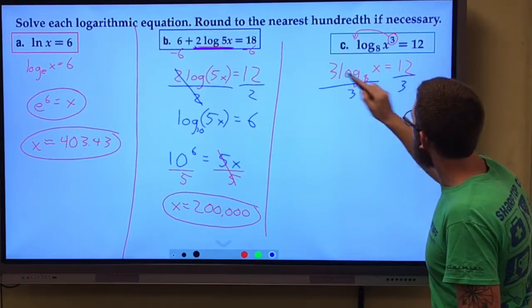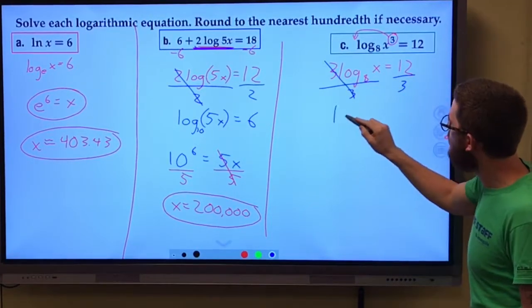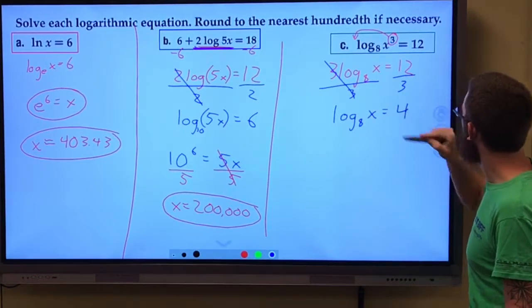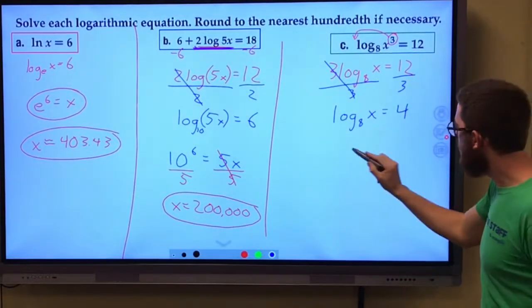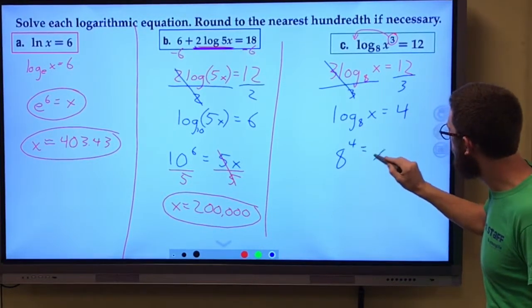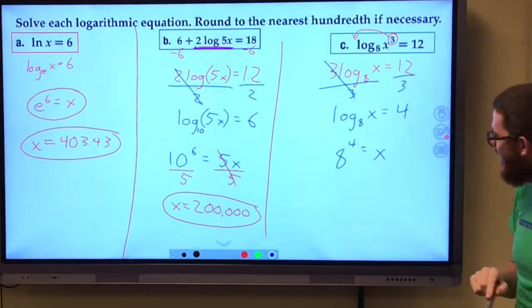Divide both sides by three so I get that log all by itself. Log base 8 of x = 4. We know a log is an exponent. The base of eight, the exponent of four, equals x.